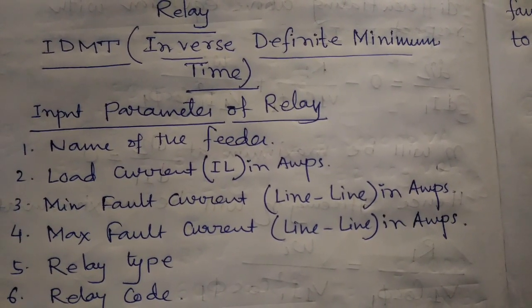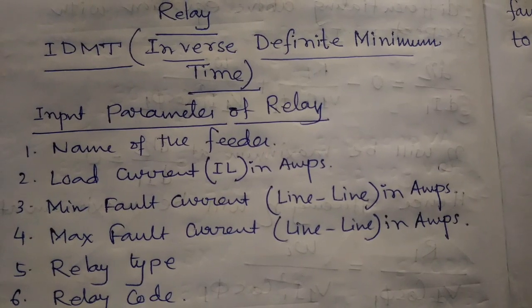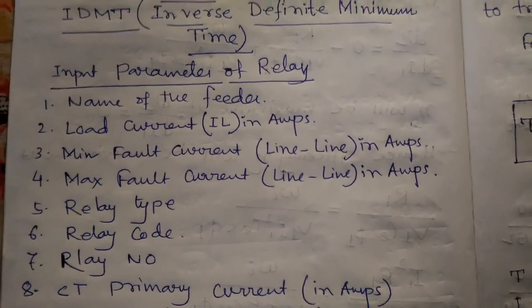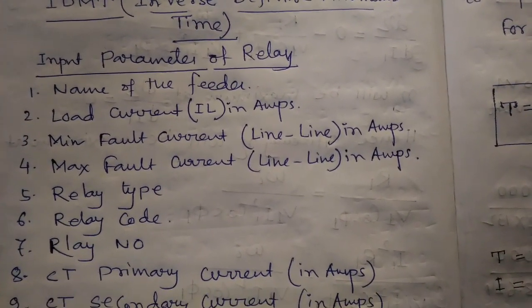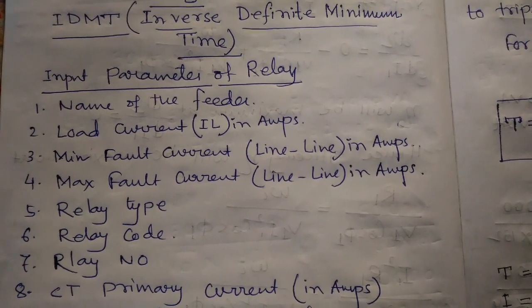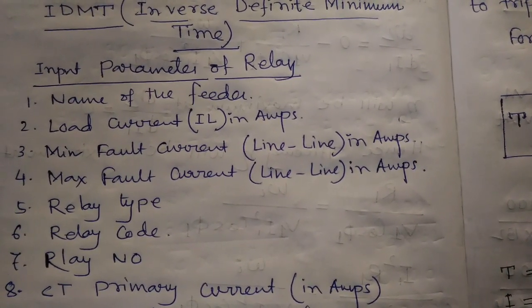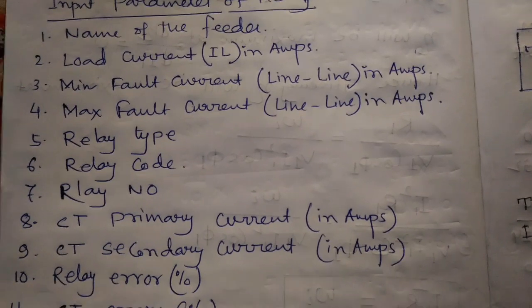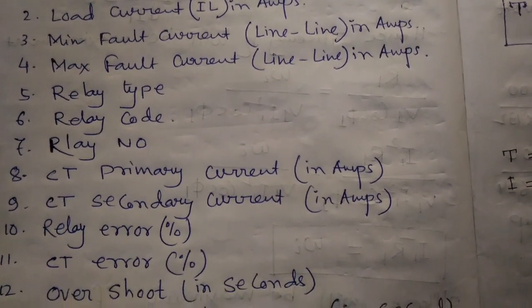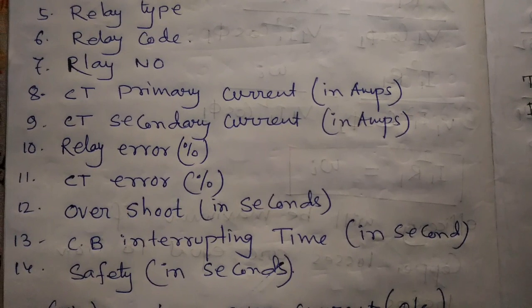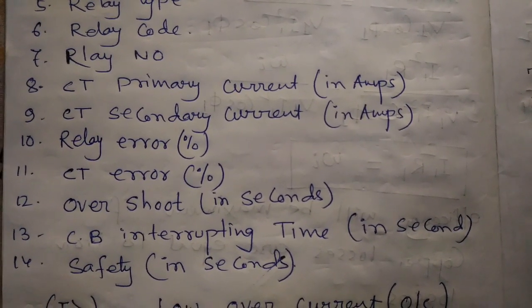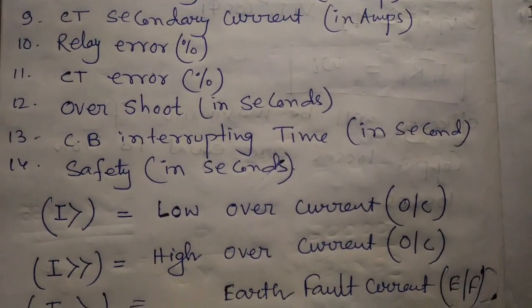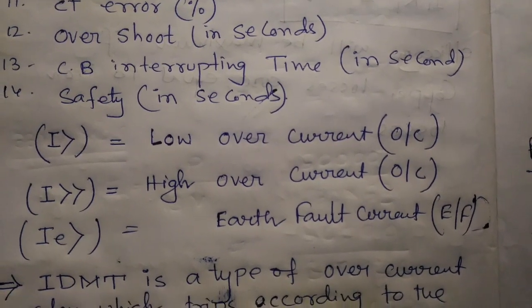Let us start with the input parameters of the relay. The input parameters include: name of the feeder, load current in ampere, minimum fault current line to line in ampere, maximum fault current line to line in ampere, relay type, relay code, relay number, CT primary current in ampere, CT secondary current in ampere, relay error, CT error, overshoot in seconds, circuit breaker interrupting time, and safety.